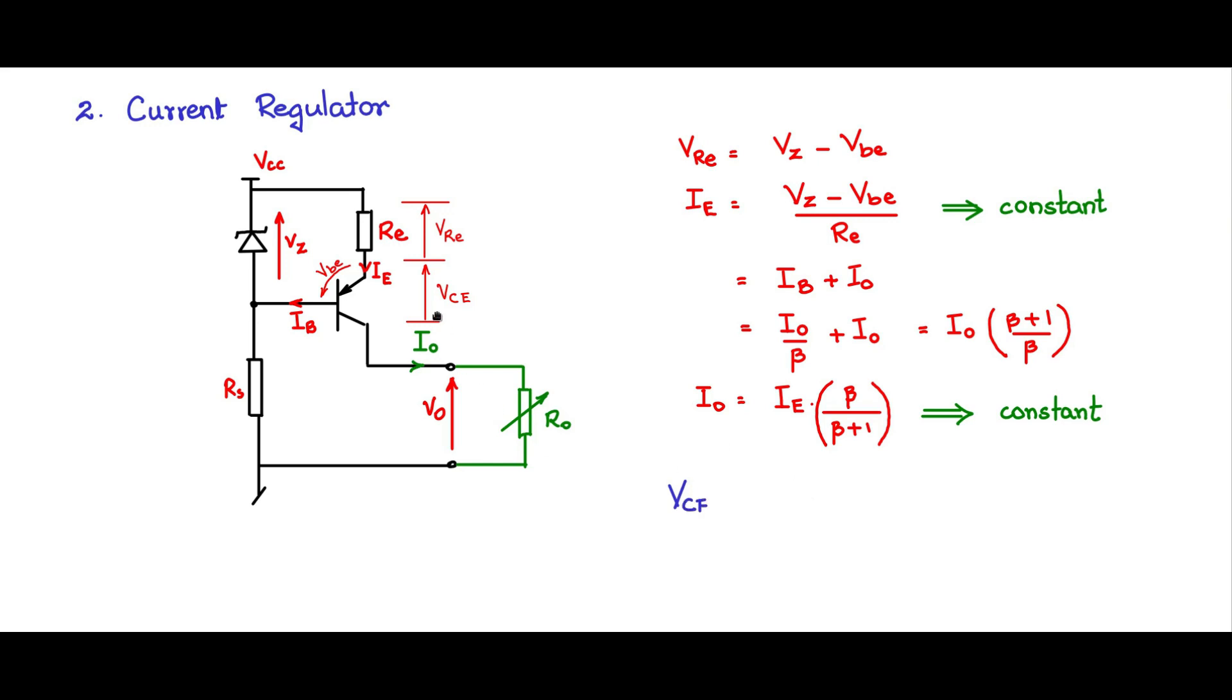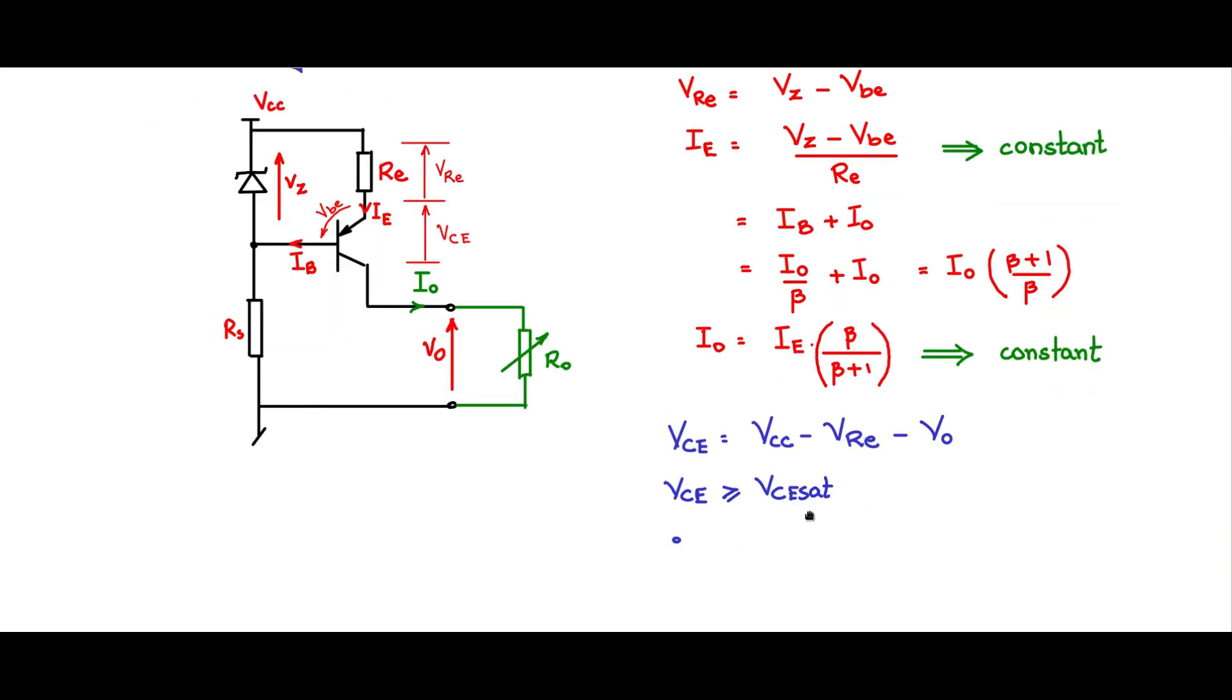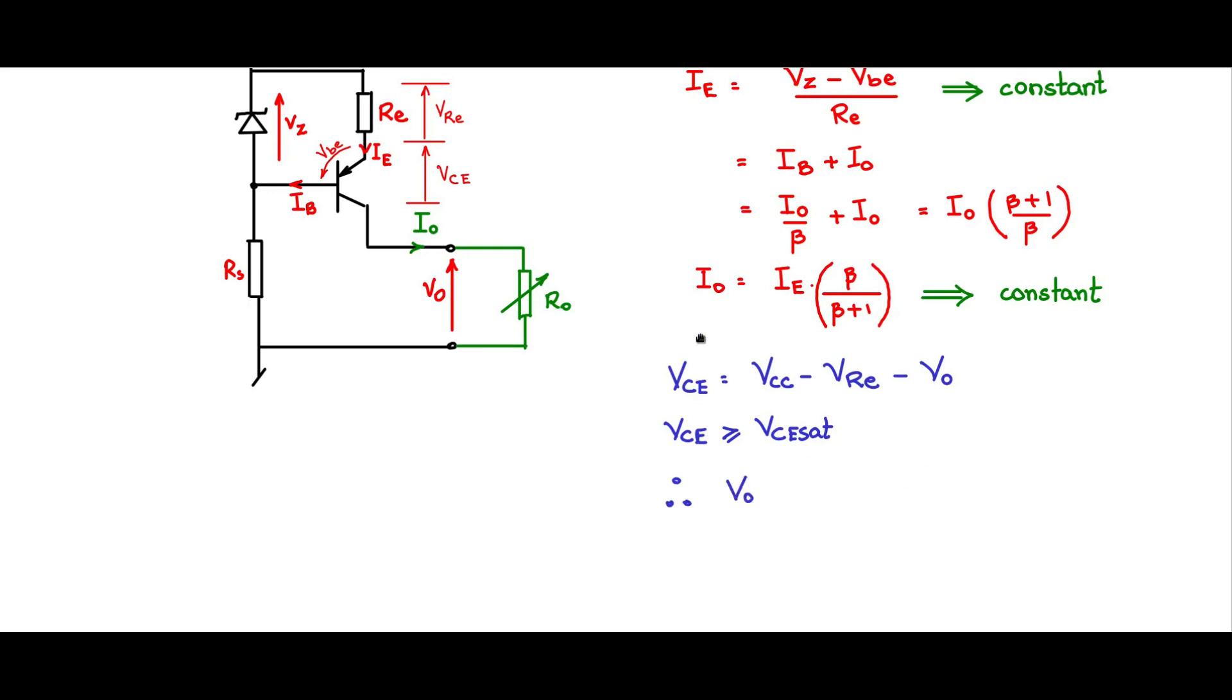Now let us write this voltage equation for this loop. So VCE, this is given by VCC minus this drop minus V naught. So which is VCC minus VRE minus V naught. Now VCE for the circuit to operate, this drop has to be greater than zero in the ideal case or it should be greater than VCE sat in the ideal case. So therefore VCE should be, as shown here, should be positive, the positive, negative should be greater than VCE sat, and therefore you will see that V naught should be less than VCC minus VRE minus VCE sat.